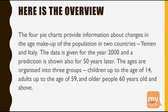Here is the overview. Why don't you read it with me? If you read aloud, your English will improve faster. The four pie charts provide information about changes in the age makeup of the population in two countries, Yemen and Italy. The data is given for the year 2000 and a prediction is shown also for 50 years later. The ages are organised into three groups: children up to the age of 14, adults up to the age of 59, and older people 60 years old and above.